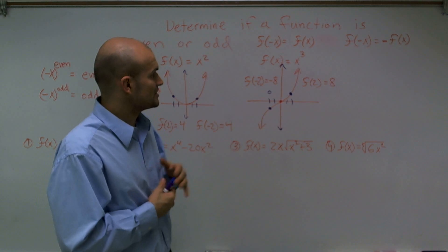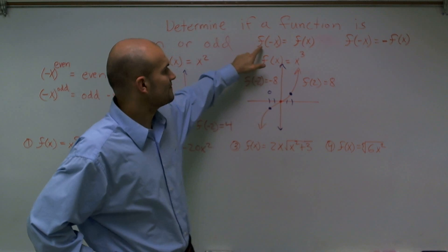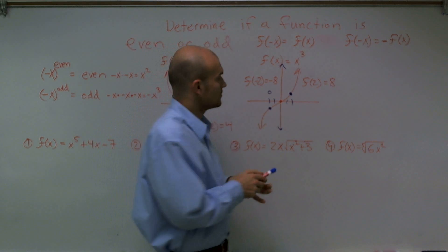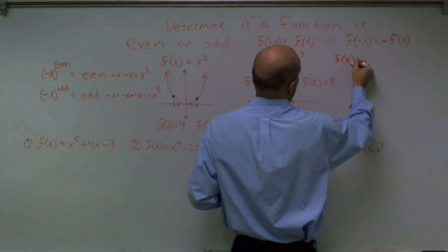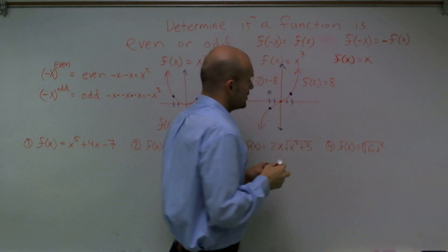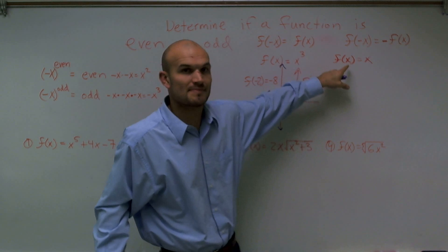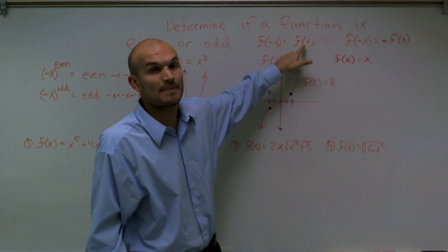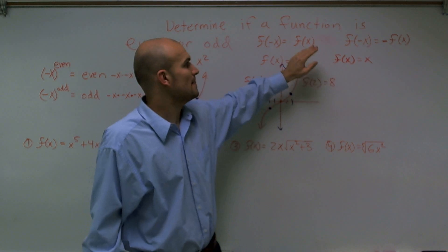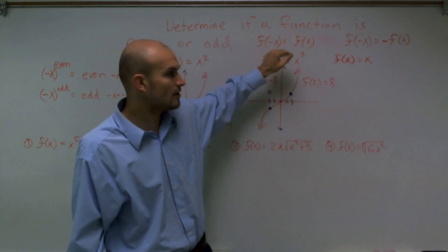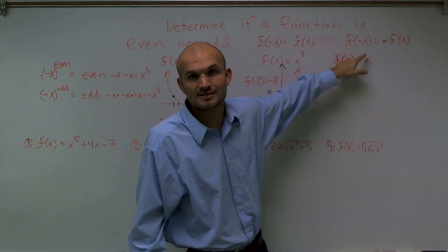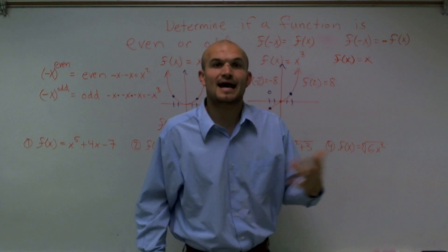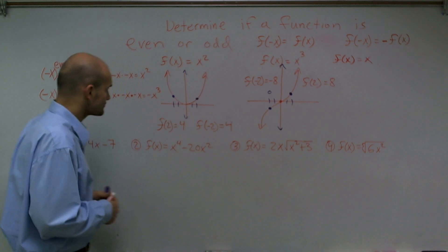Let's go with the formal definition. A function talks about our input and our output. We have a function f of x equals x, where x is my input value and f of x is my output value. If I input a negative x and I get back my original function f of x, then I have what we call an even function. If I input a negative x and I get out the negative version of my function, what I have is an odd function.